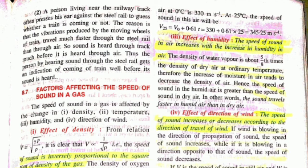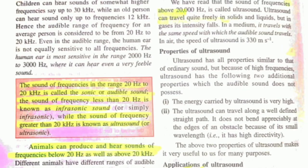There is one more formula you should know to calculate numericals: velocity is equal to distance upon time, V = D/T. Now let's come to Exercise B. The audible range is 20 hertz to 20 kilohertz.